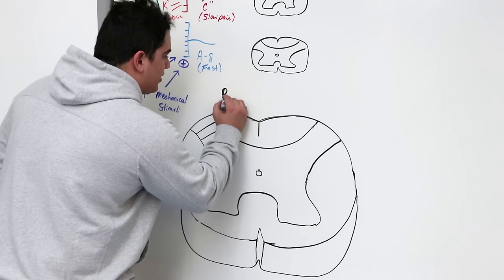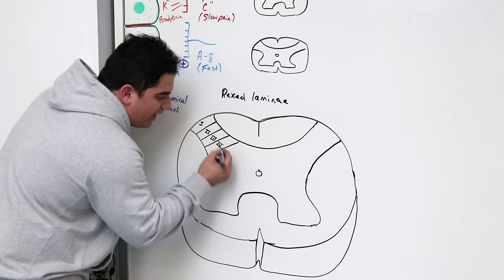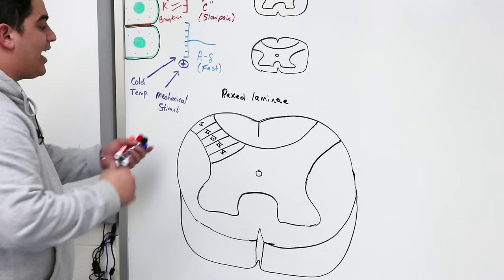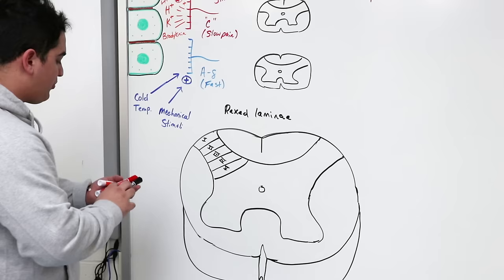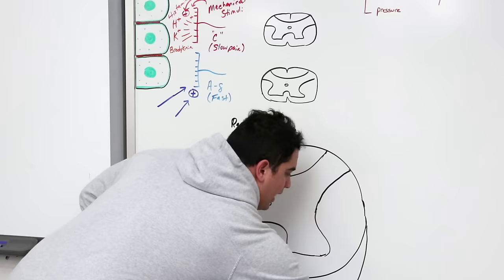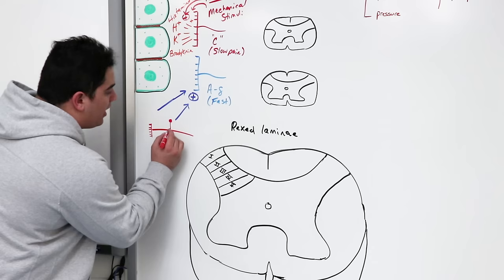We're going to focus on the laminae that are really important for the pain pathway. For C fibers: they come in via the peripheral process through a pseudo-unipolar neuron, with a central process going into the CNS. They can ascend and descend — we'll talk about that — in what's called the tract of Lissauer. They synapse specifically in Rexed lamina 2 and Rexed lamina 3.